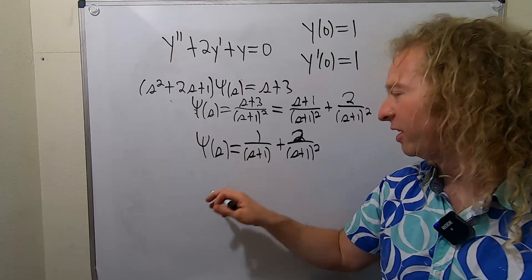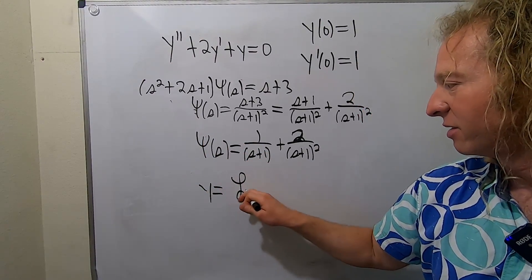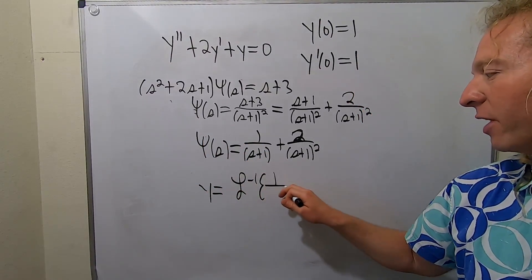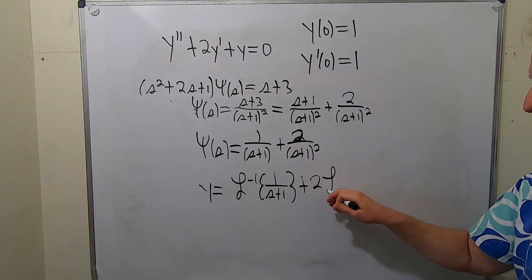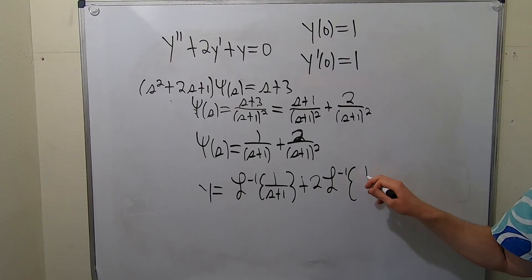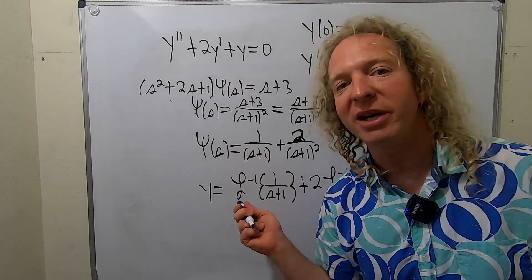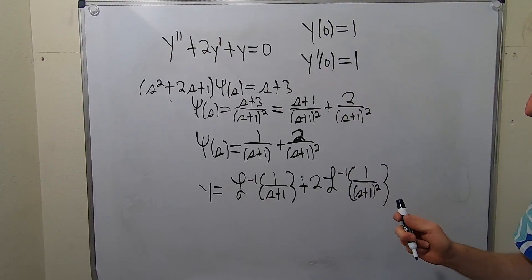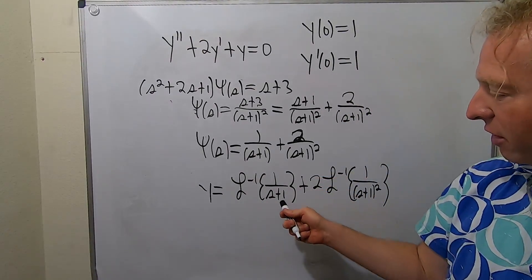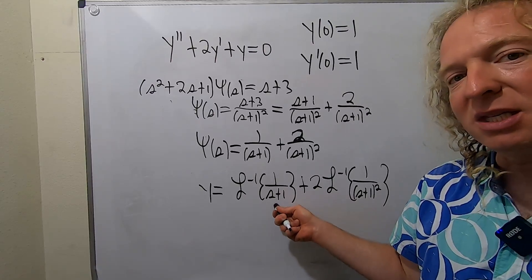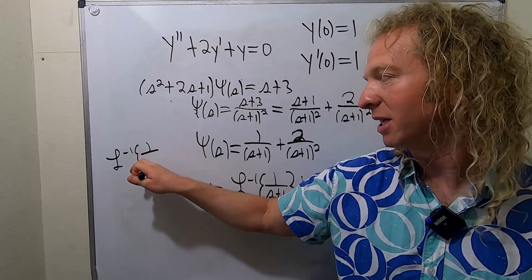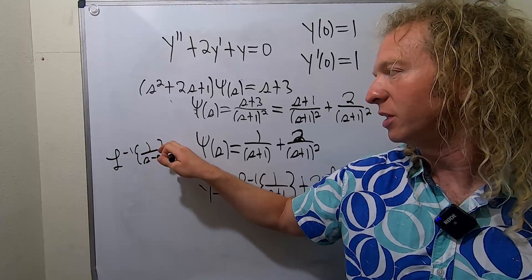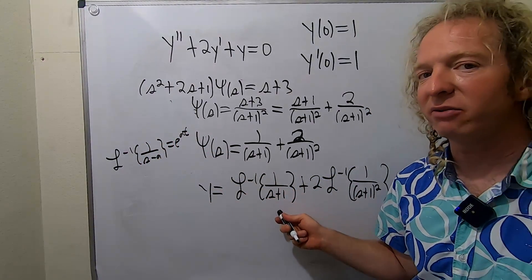So Y is equal to the inverse Laplace of this. So Y is equal to the inverse Laplace of one over S plus one. Let's pull this two out. Plus two inverse Laplace of one over S plus one squared. So using linearity of the inverse Laplace. So there are some formulas here that we can invoke. So first of all, this one is going to be E to the negative T. If you recall, the inverse Laplace of one over S minus A is equal to E to the AT. So here it's S minus negative one.